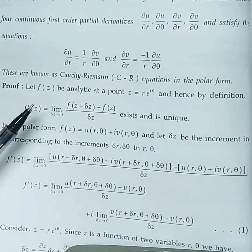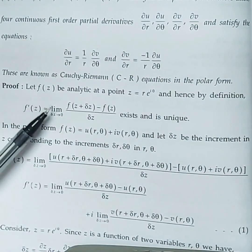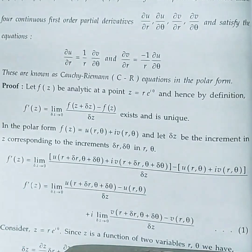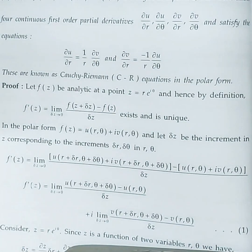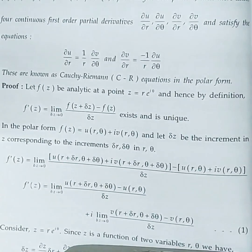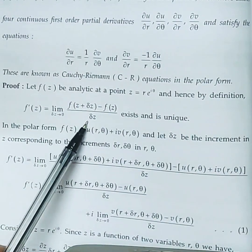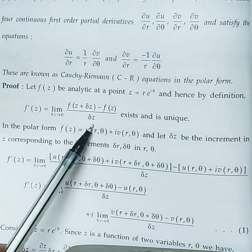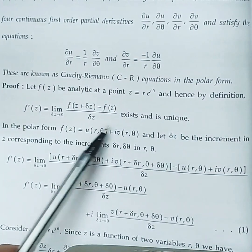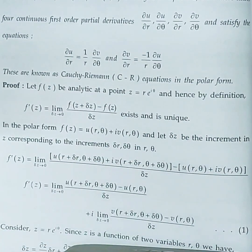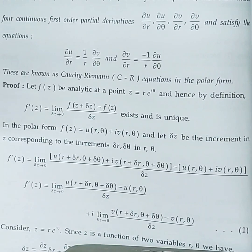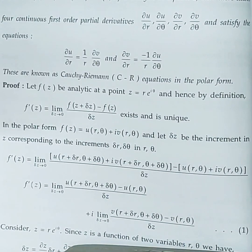Let f(z) be analytic at a point z = re^{iθ}. Hence, by definition, f'(z) = lim(Δz→0) [f(z + Δz) − f(z)] / Δz exists and is unique. We say the derivative exists and is unique because the function is analytic.